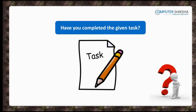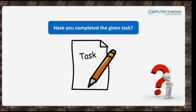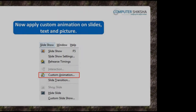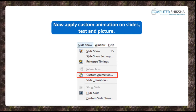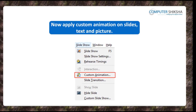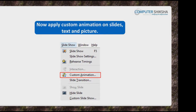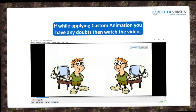Have you all been able to complete the tasks you were asked to do? Now, all of you apply custom animation on all the slides so that your text appears in a style and all the pictures that you have inserted also get shown with different effects. Then show it to your teacher. If while applying custom animation you have any doubts, then watch the video.